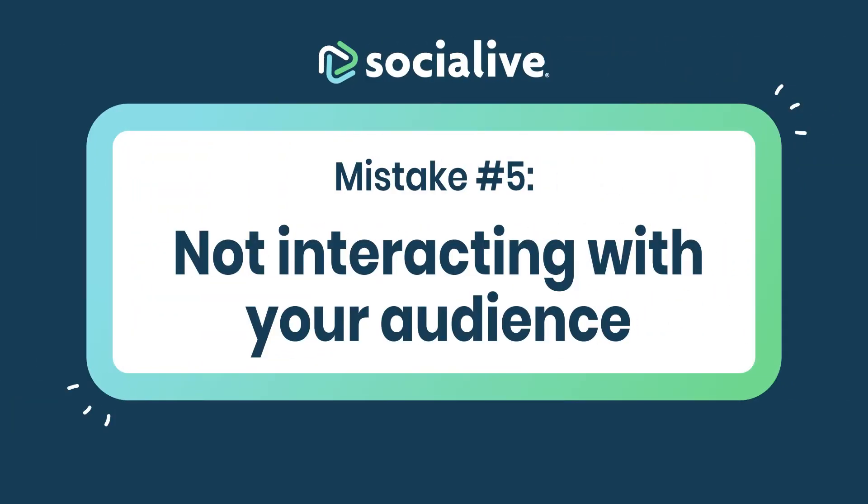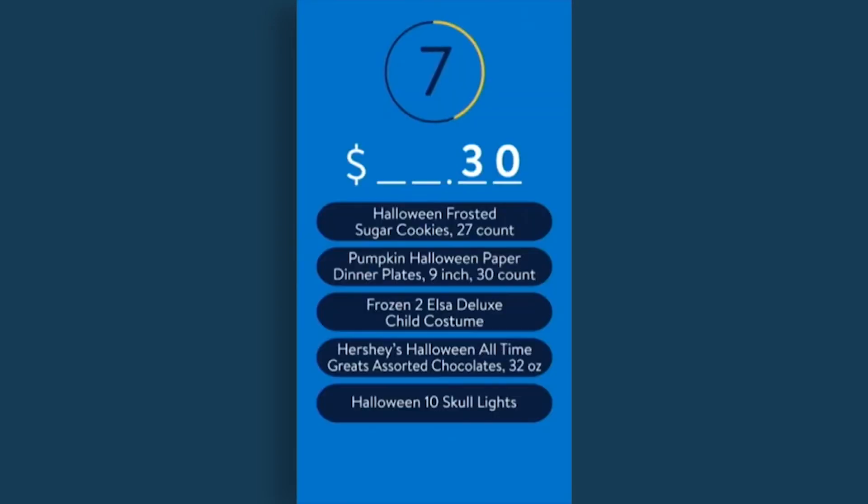The fifth mistake is not interacting with your audience. Not engaging with your audience is a missed opportunity. Make sure when your broadcast is live, you're interacting with your audience by asking questions, creating calls to action, or conducting polls.